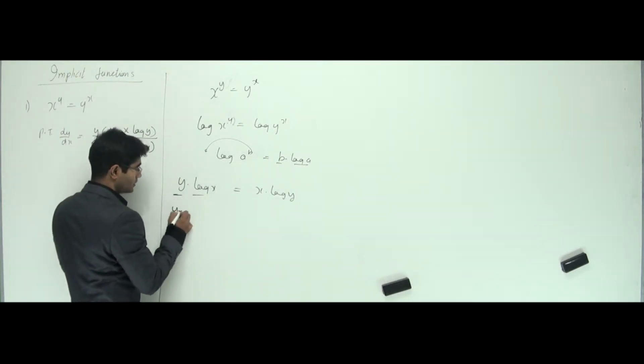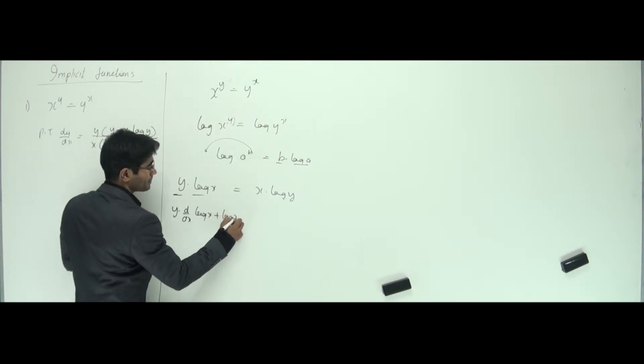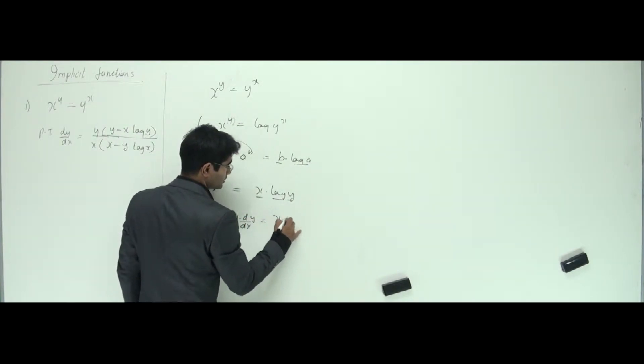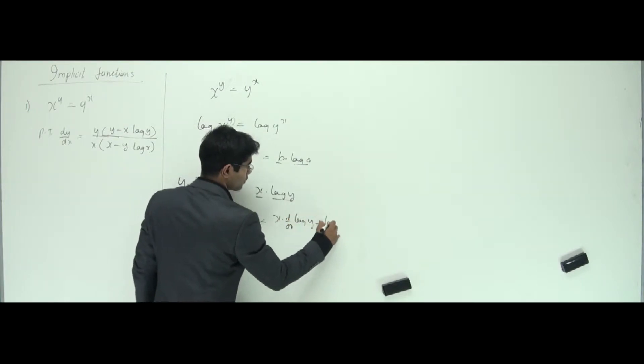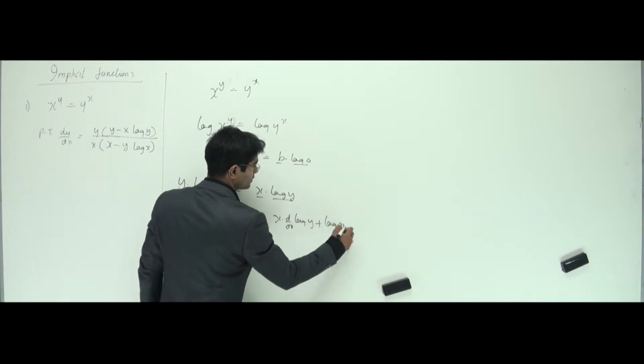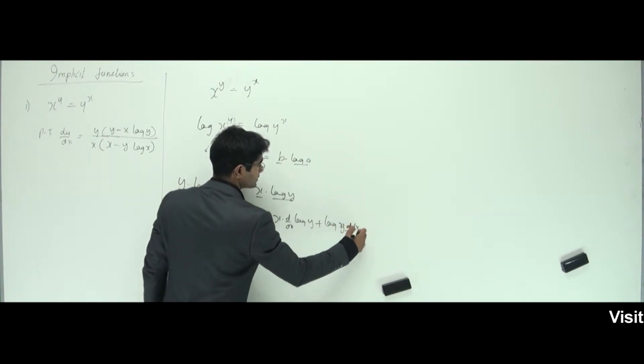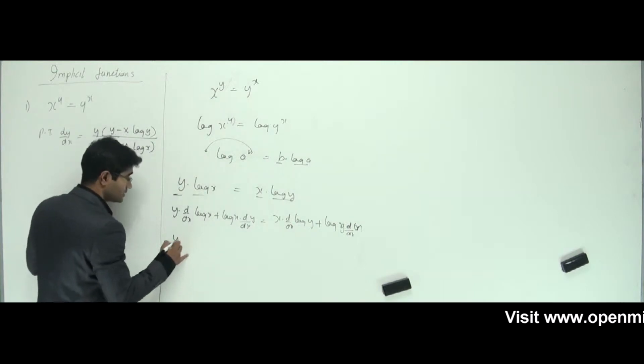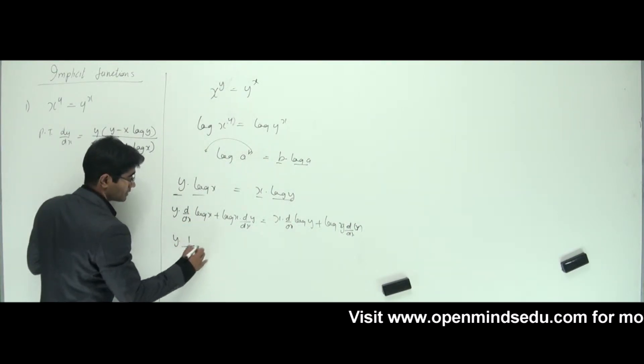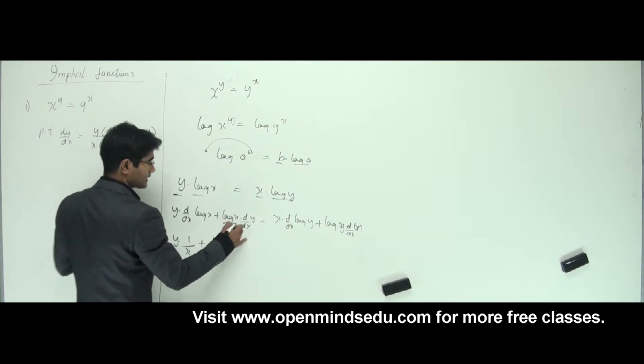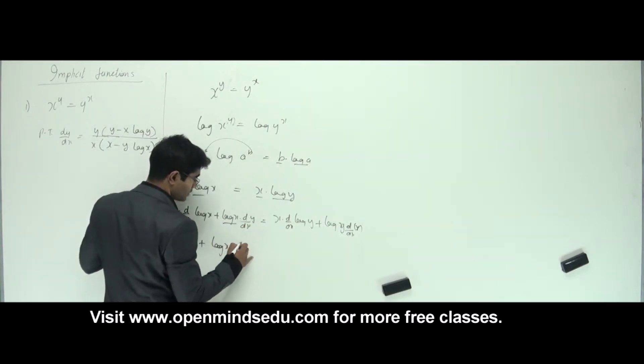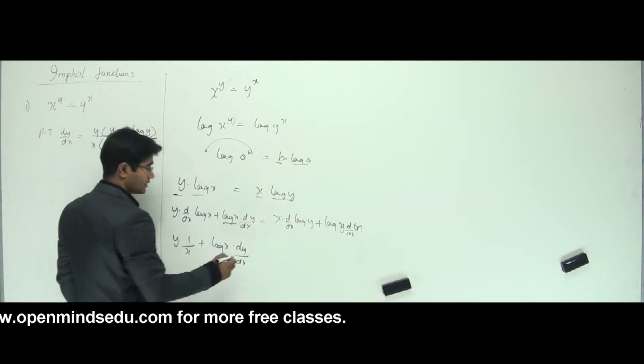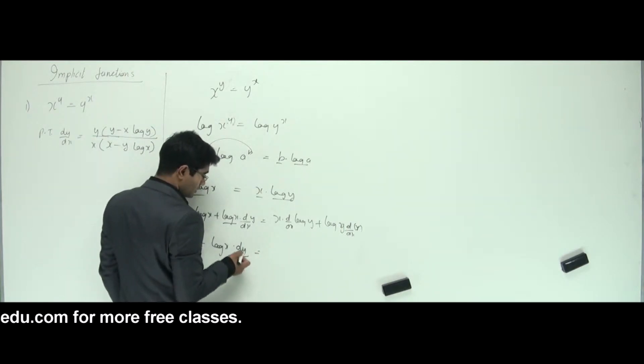So that is uv rule: y into d by dx of log x plus log x into d by dx of y. Now, here it is again like uv rule: x into d by dx of log y plus log y into differentiation of x. So what happens now? Y is just like that, and differentiation of log x is 1 by x. So log x is just like that, and differentiation of y is dy by dx. I'm looking for this guy. So do I have any more dy by dx here? We'll see.